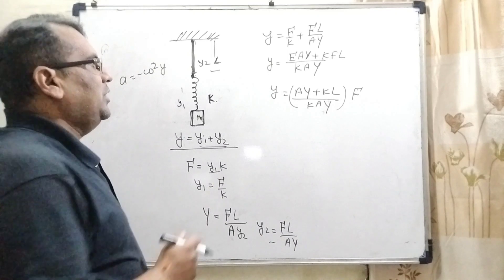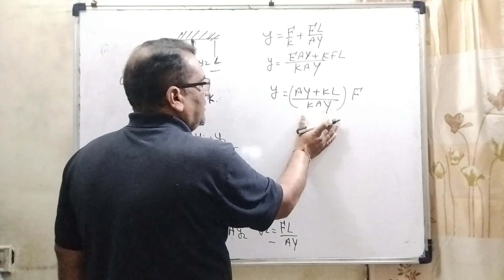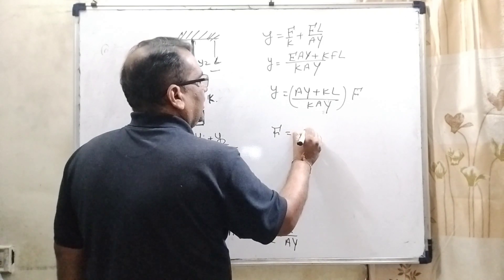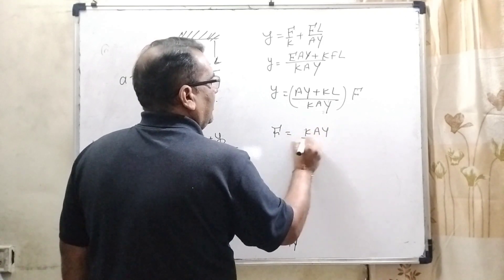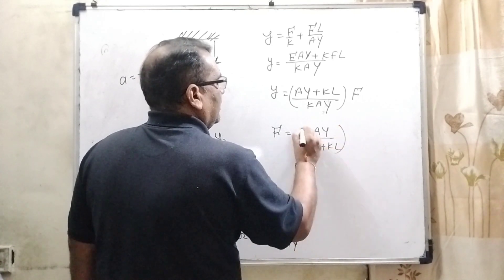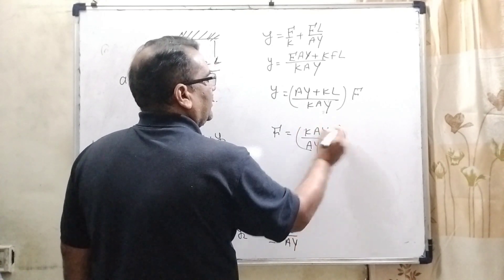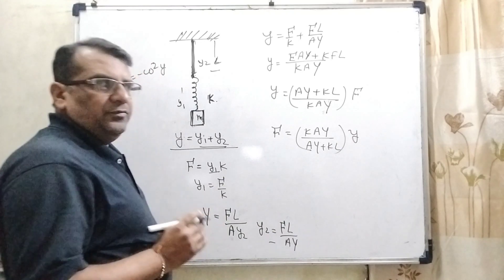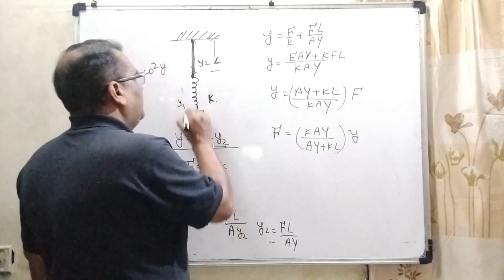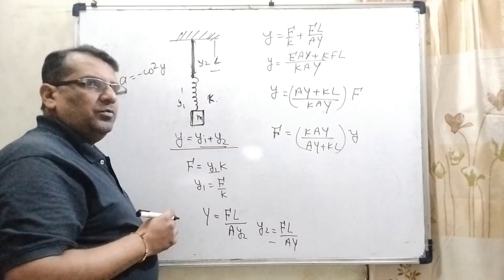So here we get the total elongation, and F can be written as F equals kAY upon (AY plus kL) times y. It is very important that if this whole system is being made to oscillate, it means this total system is against the displacement, meaning negative direction.